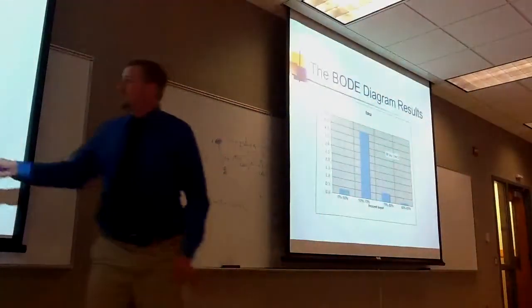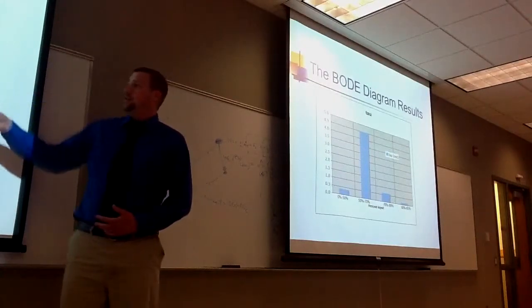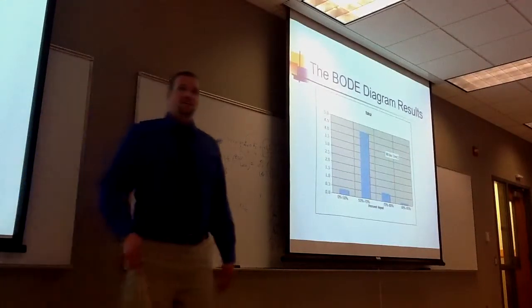And then our tau. Again, we see that this middle region had a higher tau than the rest of them. And so that's at least staying consistent.